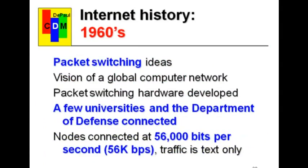In the 1960s, computers were already coming along so they could be applied to these kinds of situations. Some engineers decided to try and come up with something better, using computers to route the signals. It was called packet switching. It envisioned a global computer network, and special hardware based on computer circuitry was developed. Initially it connected a few universities to the Department of Defense, because the Department of Defense issues grants to develop various technologies and to communicate with universities. These nodes, as they were called on this early internet, were connected at what we would think is a rather low speed — 56,000 bits per second, which was considered very high speed in that day.